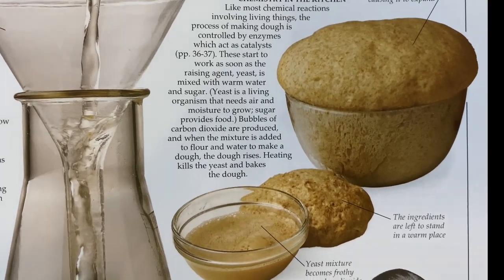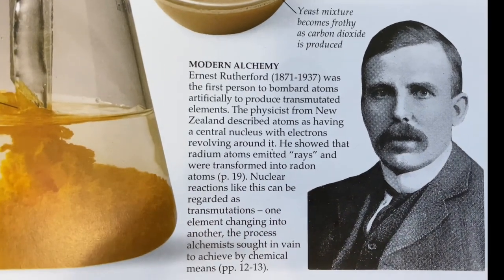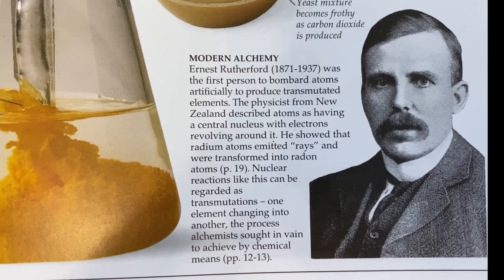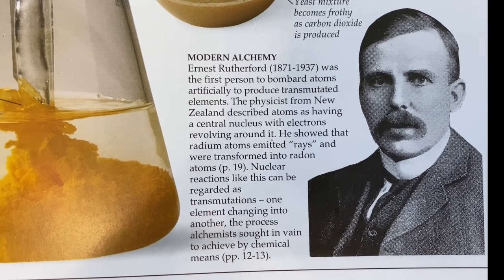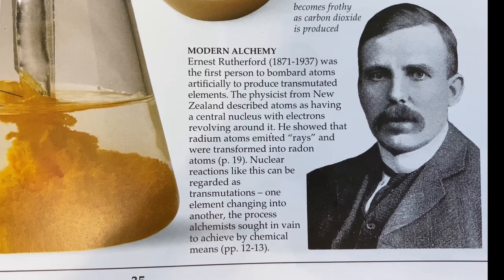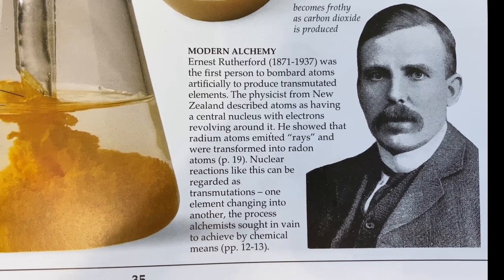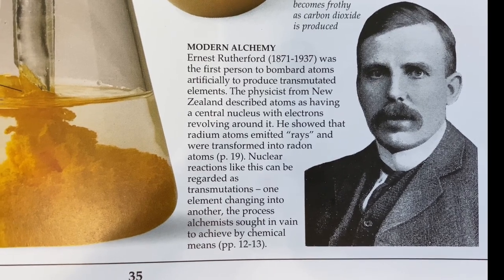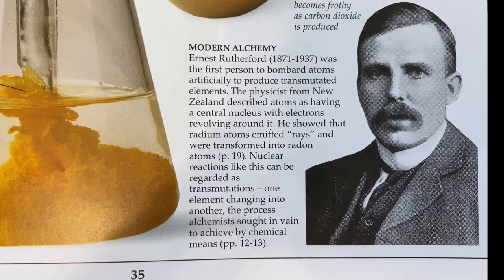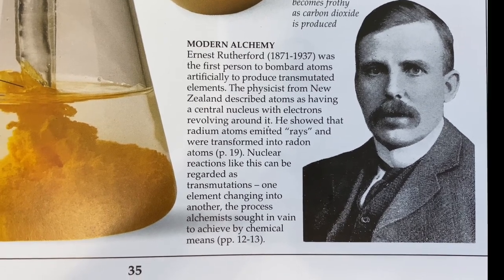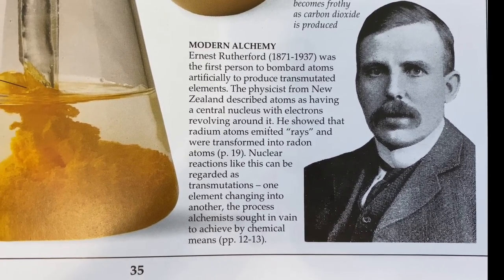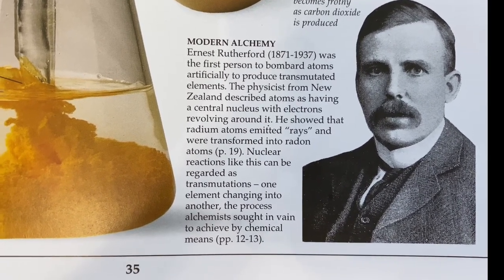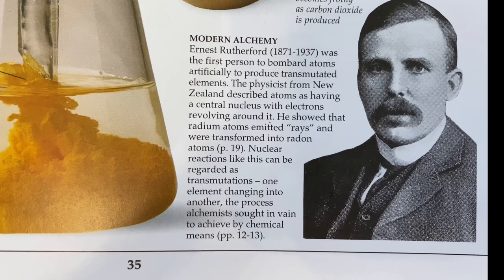Ernest Rutherford was the first person to bombard atoms artificially to produce transmutated elements. The physicist from New Zealand described atoms as having a central nucleus with electrons revolving around it. He showed that radium atoms emitted rays and were transferred into radon atoms. Nuclear reactions like this can be regarded as transmutations — one element changing into another — the process alchemists sought in vain to achieve by chemical means.